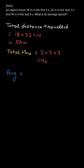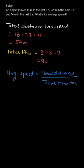So we have to find the average speed. We know we have to write the formula for average speed, and the formula is: average speed equals total distance traveled upon total time taken. We have the total distance traveled as 54 meters and the total time taken as nine seconds.